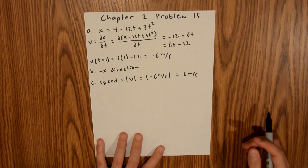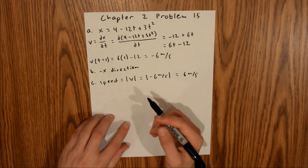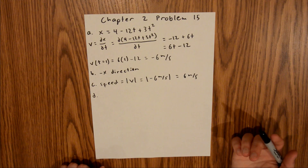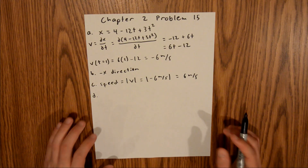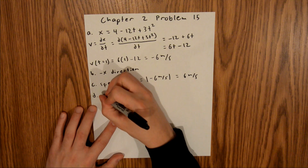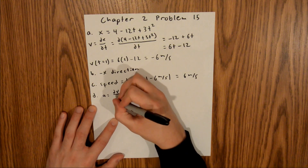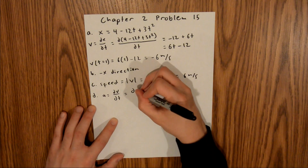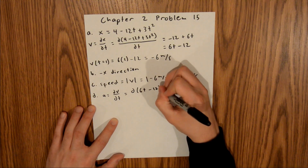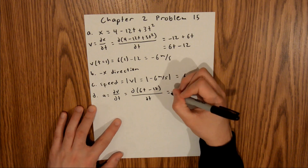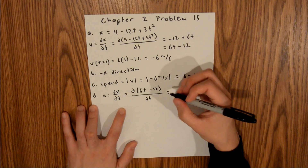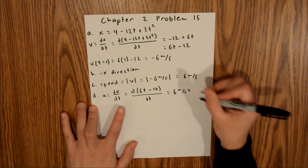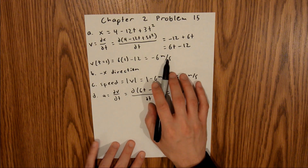For part D, we are asked to find if the speed is increasing or decreasing at time t equals 1. In order to answer this, we need to determine the acceleration, which is the change in velocity with respect to time. Our acceleration is the derivative of the velocity equation 6t minus 12 with respect to time. The derivative of 6t is 6 and the derivative of negative 12 is 0, so our acceleration is 6 meters per second squared.